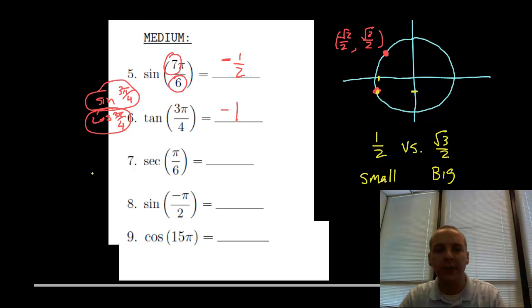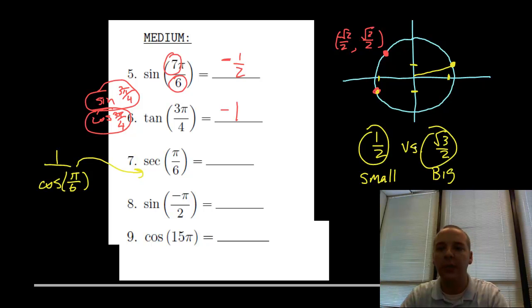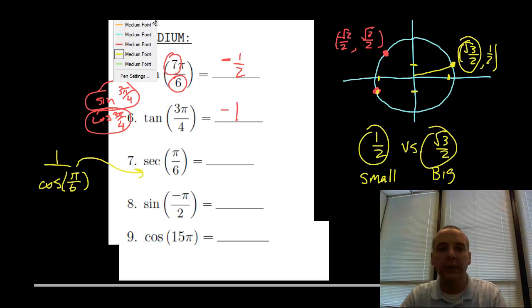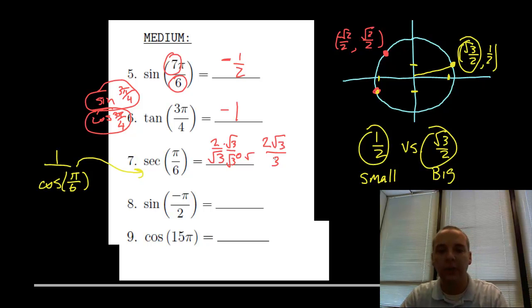Secant. If you remember the definition of secant, secant is 1 over cosine. I have to find cosine of pi over 6 and then take its reciprocal, because it's 1 over that. Here's pi over 6 on the unit circle - a numerator of 1 and denominator of 6, that's the first quadrant angle right here. The cosine is the largest X value, root 3 over 2. So the secant would be 2 over root 3, or you could rationalize the denominator by multiplying by root 3 over root 3 and get 2 root 3 over 3.